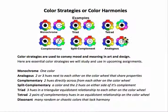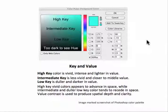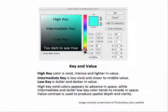Key and value: high key means lighter, brighter, more vivid, more intense. Intermediate is somewhere in the middle. Low key is darker — when it gets too dark you can't see the color anymore, it just drops out. It's fine to mix a little bit of intermediate into a low key just to get some distinction in value.